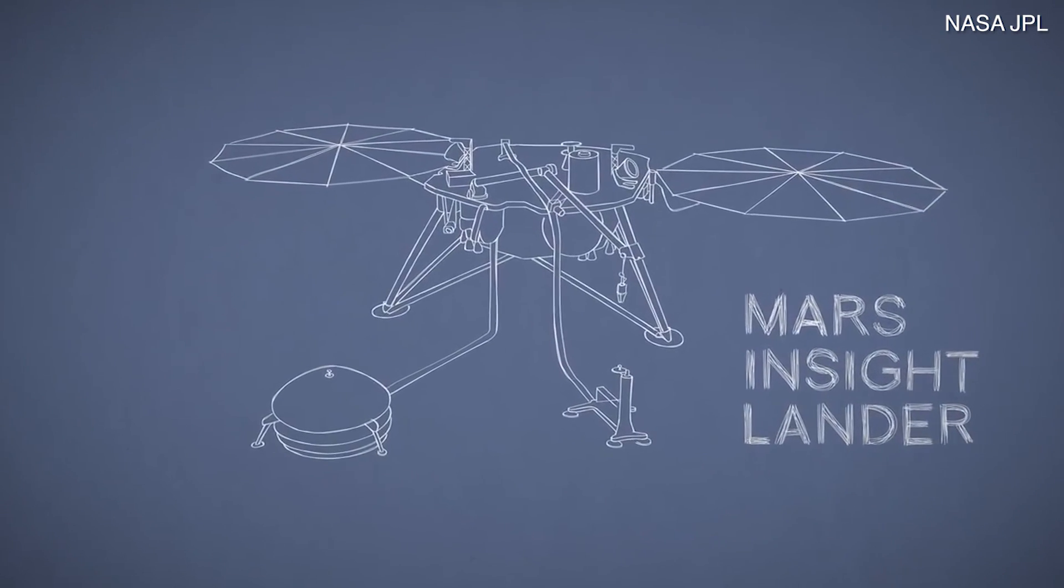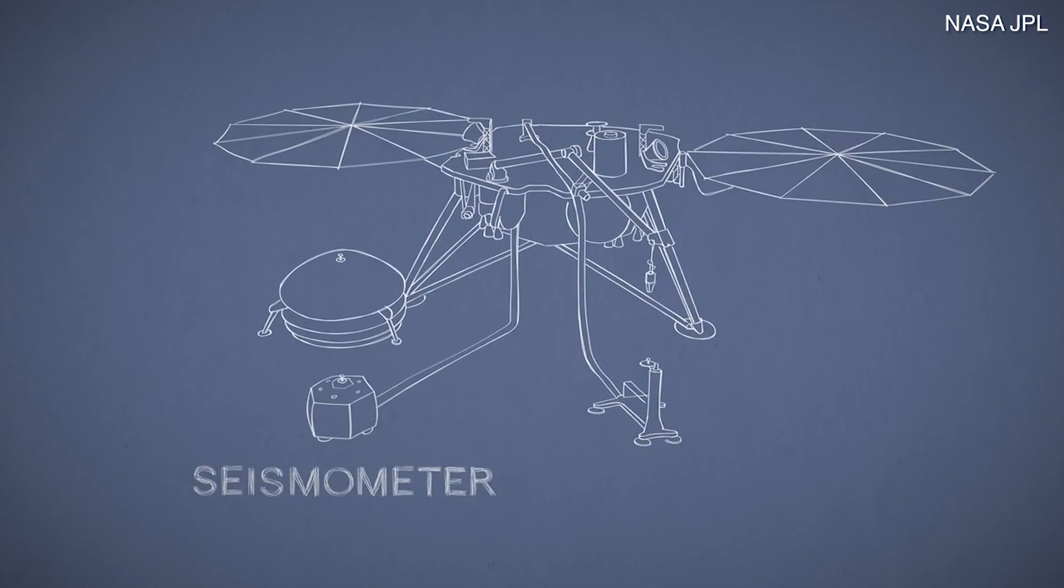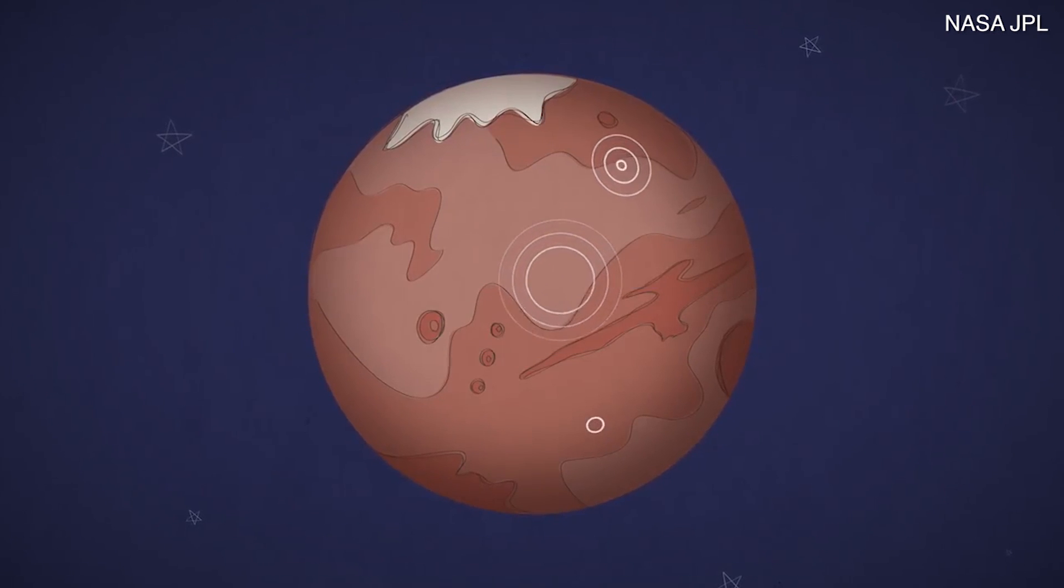NASA's InSight Lander carries a super-sensitive instrument to measure Marsquakes, and could detect dozens of them during its mission.